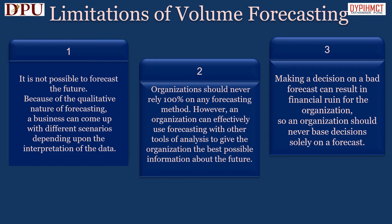Along with the advantages, there are some limitations of volume forecasting. The first limitation is that it is not possible to fully forecast the future. Because of the qualitative nature of forecasting, a business can come up with different scenarios depending upon the interpretation of data. Sometimes the methods and assumptions may be proven wrong, even if based on accurate information. The second limitation is that organizations should never rely 100% on any one forecasting method. An organization can effectively use forecasting with other tools of analysis to give the best possible information about the future. Using different forecasting methods and comparing them may give more accurate information.